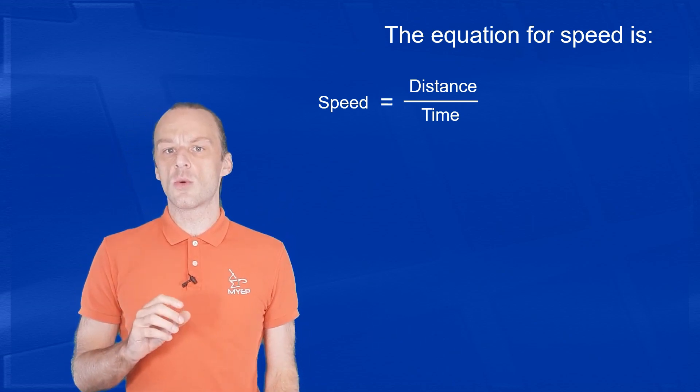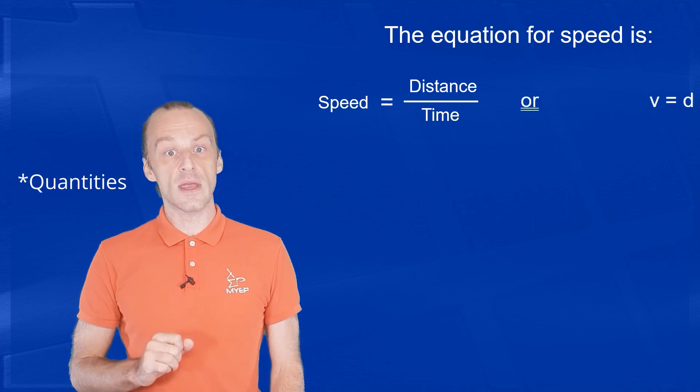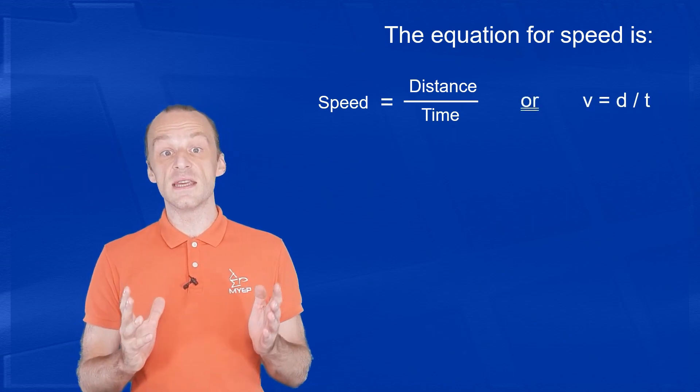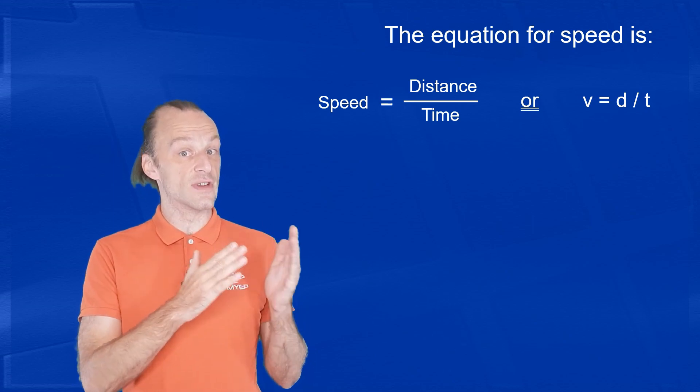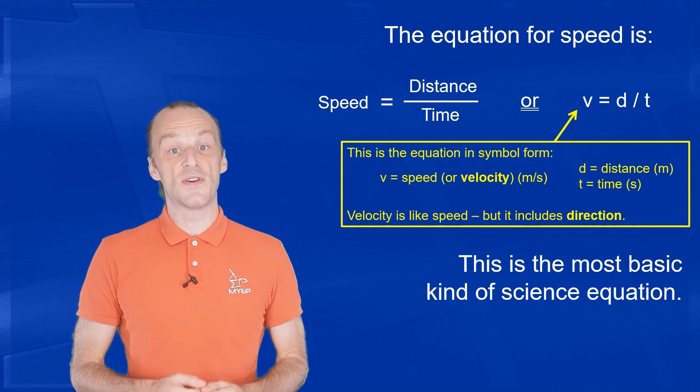We can also show this equation using letters to stand for the qualities to make it quicker to write down. In this case, we use V equals D over T.